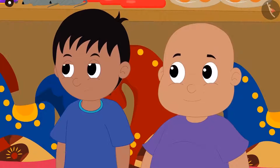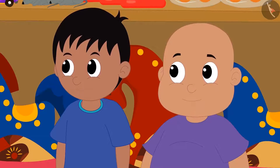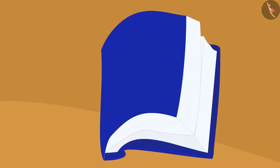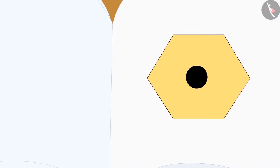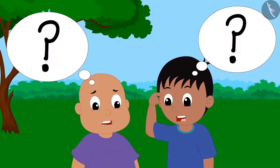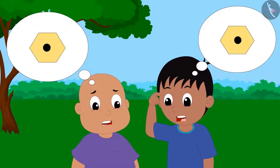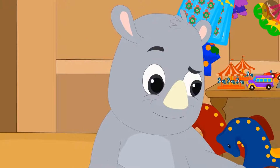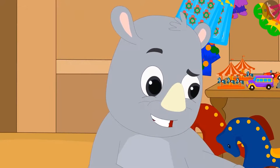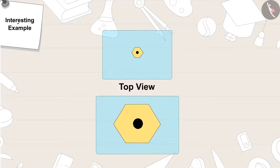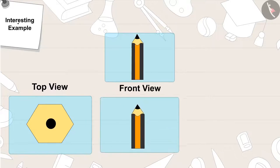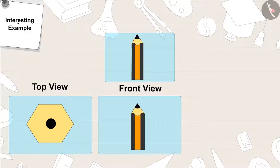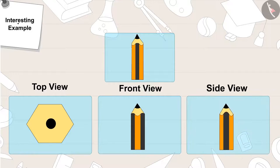They immediately replied, 'Yes!' Gagu opened the book and showed them a picture and asked them to identify the object. Raju and Bablu thought and said, 'It is very easy — it is a pencil! From the top view, a pencil looks like this. From the front view, it looks like this. And from the side view, it looks like this.'